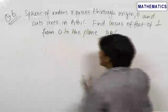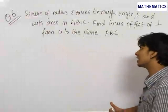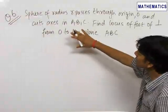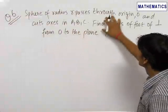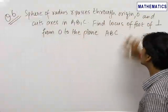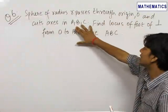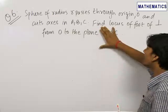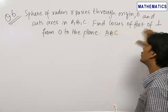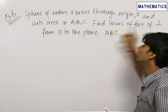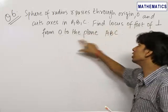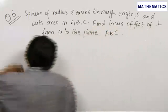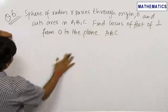The sixth question is a very interesting and conceptual problem. We have been given a sphere of radius R which passes through the origin O and cuts the axes in points A, B and C. We need to find out the locus of the foot of perpendicular from the origin to the plane ABC. Let us solve this question.